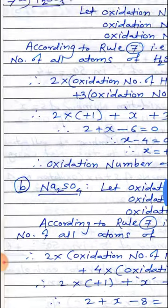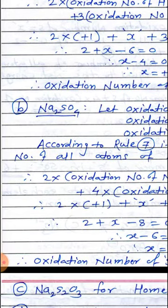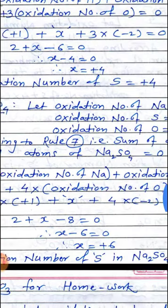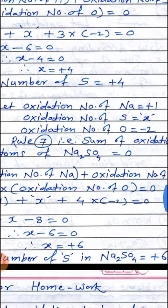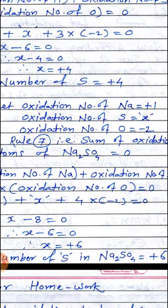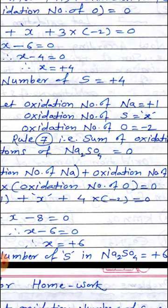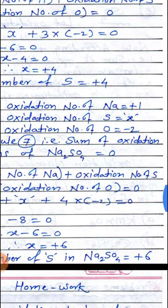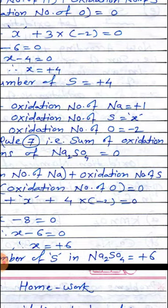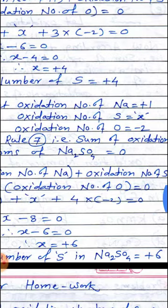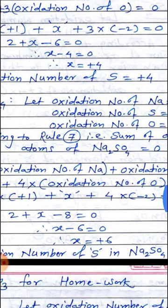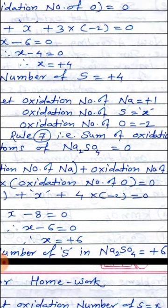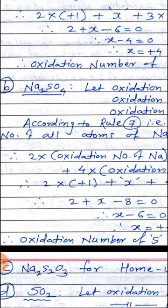Second example, B: we have to determine the oxidation number of S in Na₂SO₄. Let the oxidation number of S equal to x. The oxidation number of sodium is plus 1 and the oxidation number of oxygen is minus 2. Na₂SO₄ is the molecule.